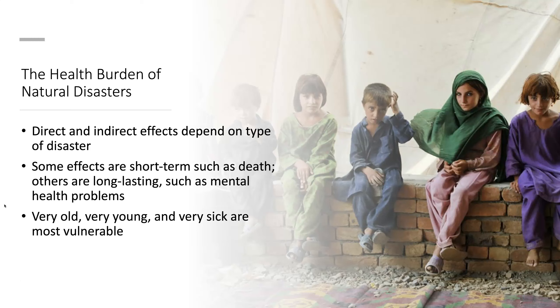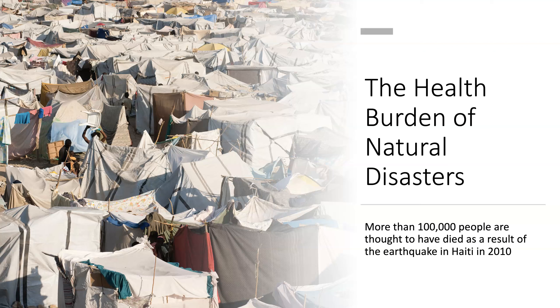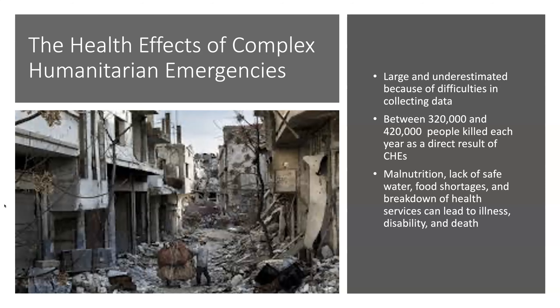The health burdens of natural disasters include direct and indirect effects depending on the disaster. Some effects are short-term such as death rates, while others have longer-lasting issues such as mental health problems. The very old, the very young, and the very sick are the most vulnerable. More than 100,000 people are thought to have died as a result of the earthquake in Haiti in 2010. Between 320,000 and 420,000 people are killed each year as a result of complex humanitarian emergencies.